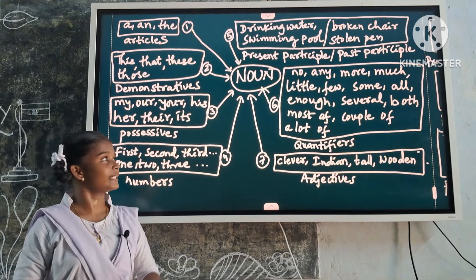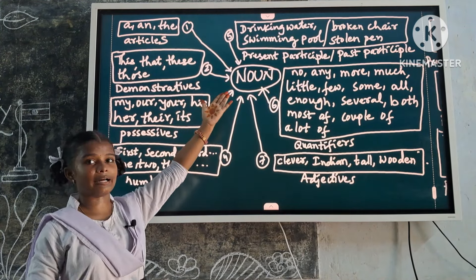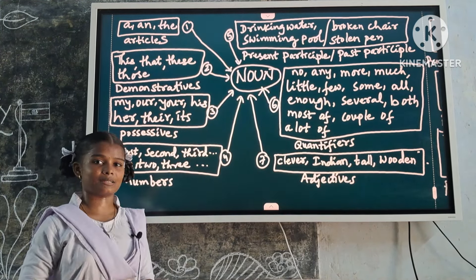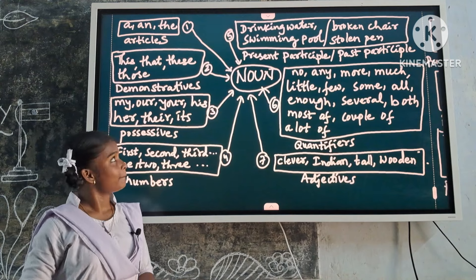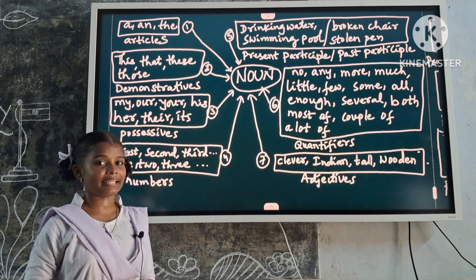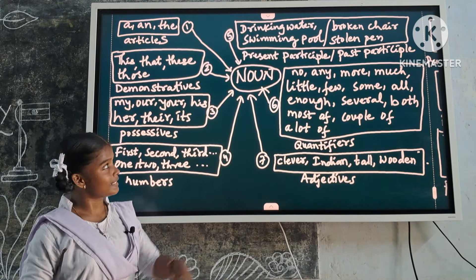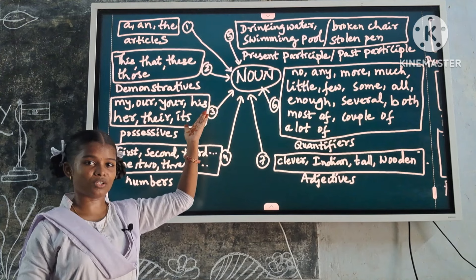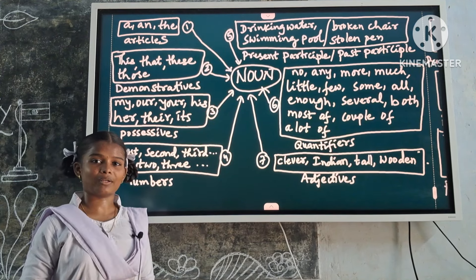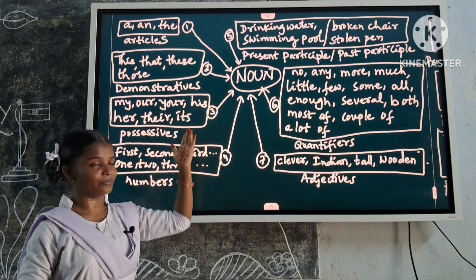Next one: present participle or past participle. Present participle examples: drinking water, swimming pool. These are noun modifiers because they describe the noun.